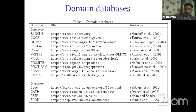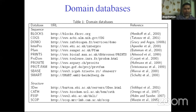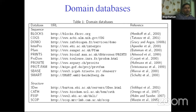Now let me come to the different types of domain databases. The important domain databases that are mostly used are Blocks, InterPro, Pfam, Prints, and Prosite — these databases contain the amino acid sequence information of different domains. There are also structural domain databases like CATH, FSSP, and SCOP, which store information about the structural aspects of different domains.